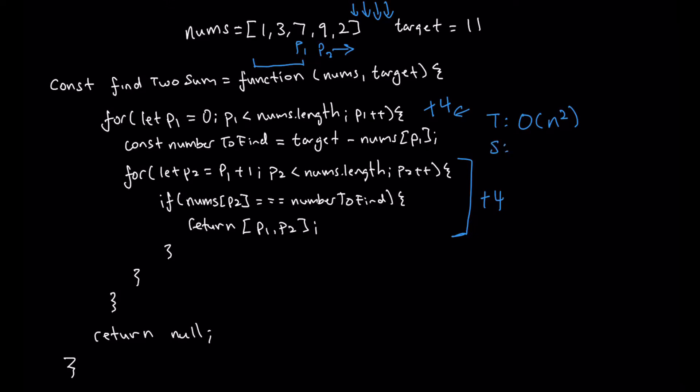What about space though? What about our space complexity? Well with space complexity, we really see that this is the only thing that we're storing in memory, our number to find value. We're not actually really caching any other values in memory. And even if our nums array were to increase, this number to find doesn't really grow. We're just storing that one number in memory and that number changes every time our P1 changes. So we actually have a space of O of 1, which as we remember from our big O notation is the best complexity we can achieve.